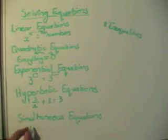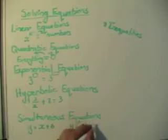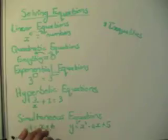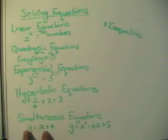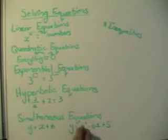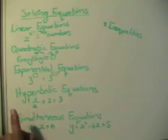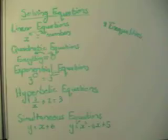Simultaneous equations is where you have two equations - for instance, y = x + 6 and y = x² - 4x + 5 - and you want to use them both at the same time to find an x-y pair that satisfies both equations simultaneously. There are two basic methods: substitution and elimination. I prefer substitution, which I'll discuss in detail in a separate video dedicated to simultaneous equations.